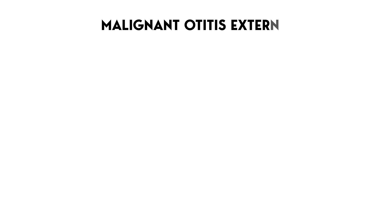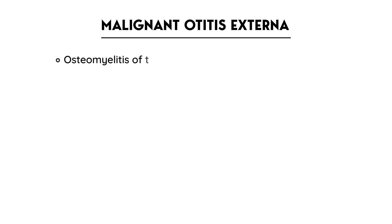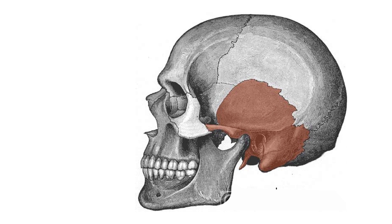Now turning to malignant otitis externa. Malignant otitis externa is essentially an infection of the temporal bone — specifically, what we are referring to is osteomyelitis of the temporal bone. Here is a photo of the temporal bone showing how it can become infected.